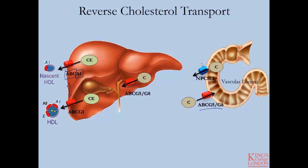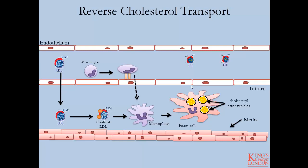Sterol transport into the body is controlled by another transporter, NPC1L1, which is responsible for transporting cholesterol from the intestinal lumen into the enterocyte. There is a system in place to conserve and reabsorb sterol cholesterol that is lost, and this transporter is highly specific to cholesterol and less specific to other sterols. This illustrates how cholesterol leaves the body through ABC transporters expressed in particular tissues.